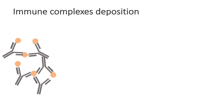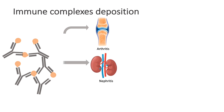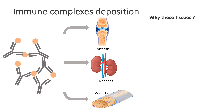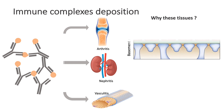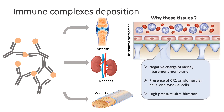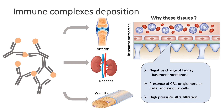Inadequate removal of immune complexes from the body results in their accumulation and subsequent deposition in joints, causing arthritis; in the kidneys, leading to nephritis; and in blood vessels, causing vasculitis. Why these tissues in particular? There are a couple of reasons that explain why immune complexes are deposited specifically in kidneys, joints, and blood vessels.